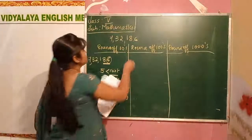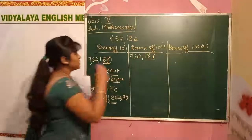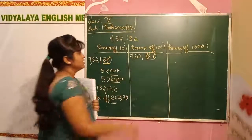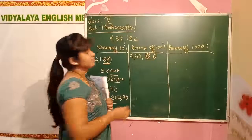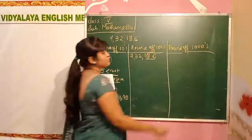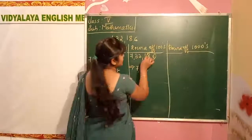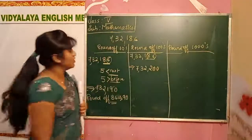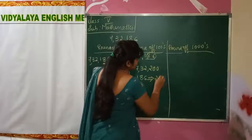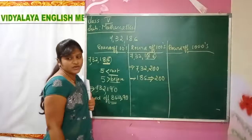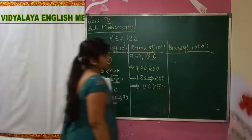Now we will move on to hundreds. Seven lakh thirty-two thousand one eighty-six. Round off to hundreds — in hundreds, we have to see these two numbers. Is it more than fifty or less than fifty? More than fifty. So eighty-six becomes one hundred, because we are rounding off to hundreds. One eighty-six is rounded off to two hundred. So it becomes seven lakh thirty-two thousand two hundred.